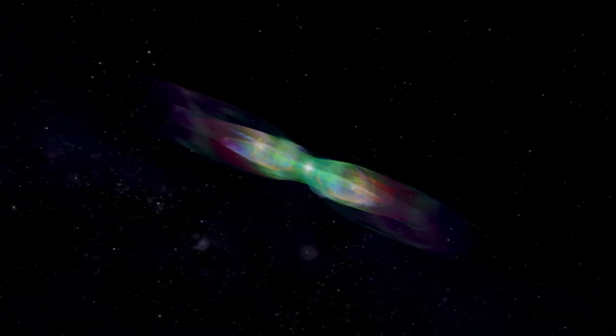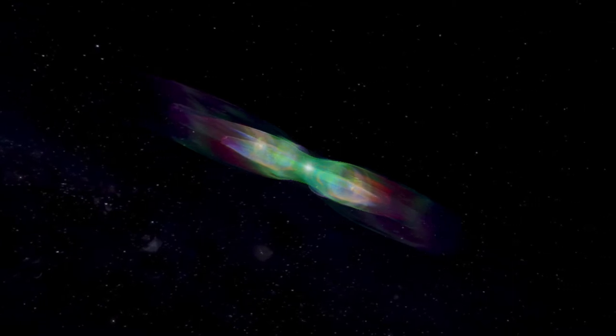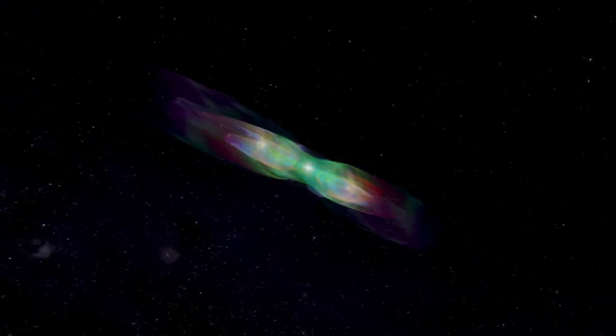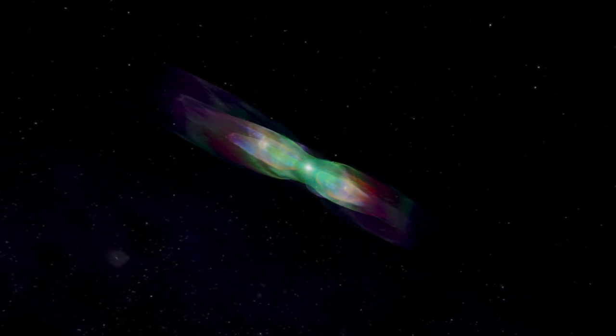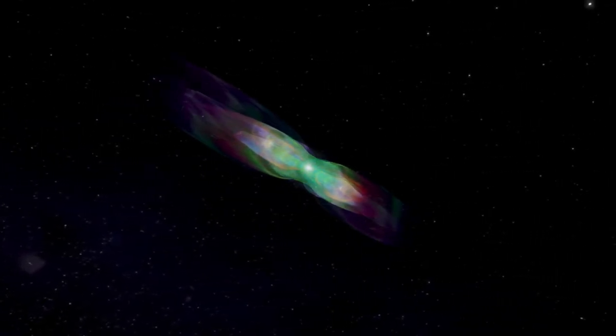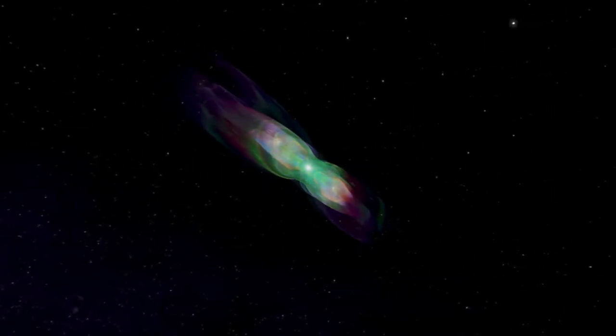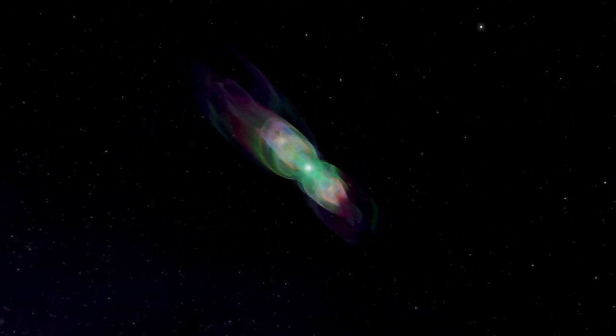Red giant stars, at the end of their lives, eject glowing shells of ionized gas that expand with high velocities through the interstellar medium. These objects are known as planetary nebulae.